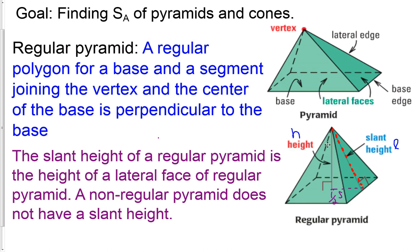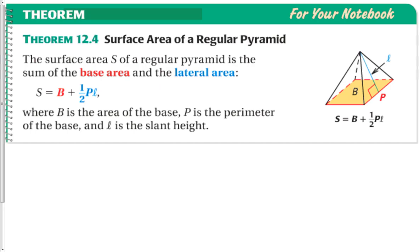Slant height is used because if we unfolded this, it would be a base with four triangles on top of the sides. The height of those sides would actually be the slant height. The slant height of a regular pyramid is the height of the lateral face. A non-regular pyramid does not have a slant height. We'd have multiple ones.